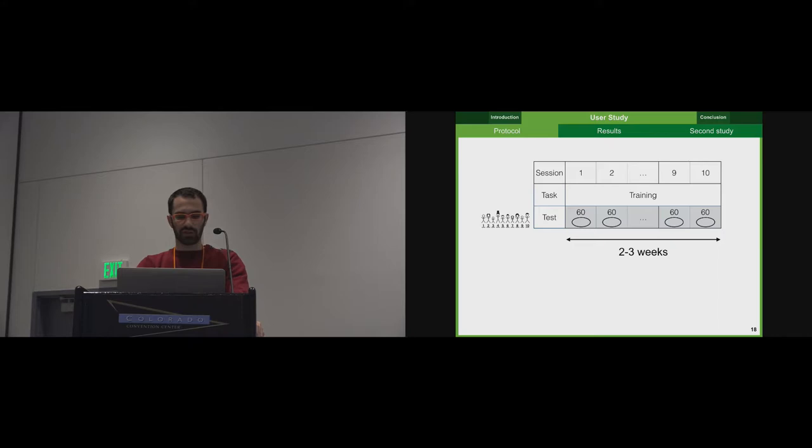But this experimental design is not sufficient. Because if we see a decrease of the tracking error with sessions, we would not be able to say if this is an adaptation to the delay, or just an improvement of tracking skills. So we thus need a control group, with people performing the task with ideally no delay.